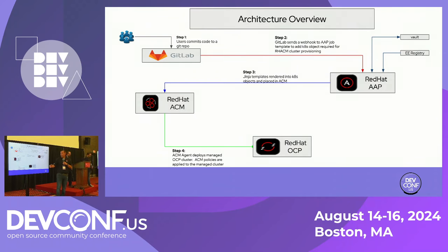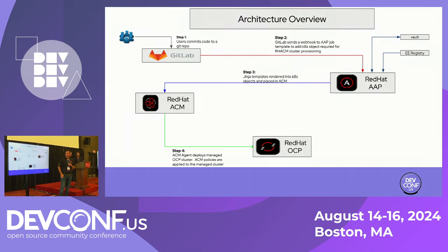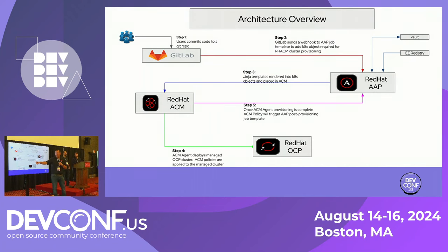ACM creates your managed cluster, that managed cluster is joined, and it also applies any ACM policy — think install operators, configure LDAP, whatever policies you want to apply to those clusters. At the same time, our AAP job is sitting there waiting for the clusters to become available. As soon as it sees that the clusters are available, it goes ahead and puts a label on the managed cluster object in ACM — post-provision equals true. That can be anything you want; that's just what we decided to use.